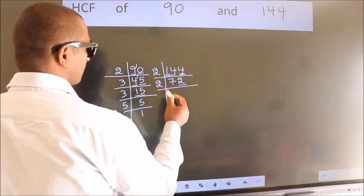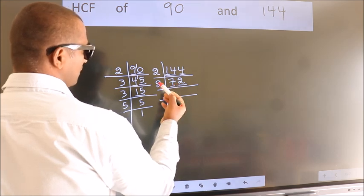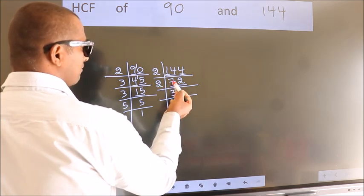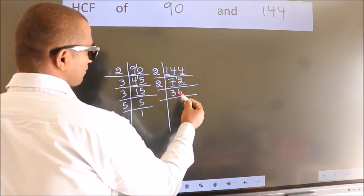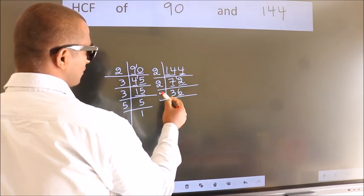Last digit 2, even number, so take 2. First number 7. A number close to 7 in 2 table is 2 threes 6. 7 minus 6, 1, 1 carried forward 12. When do we get 12 in 2 table? 2 sixes 12. Now last digit 6, even number, so take 2.